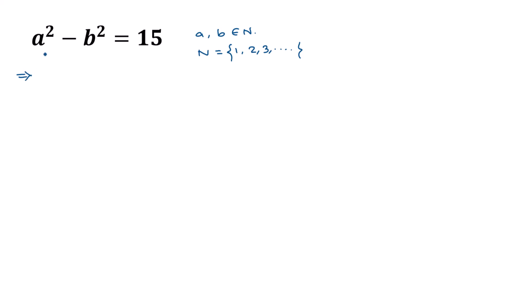Applying the formula a² − b² = (a + b)(a − b), we can write the left side as (a + b)(a − b) = 15. This can be written as 15 × 1 and also as 5 × 3.